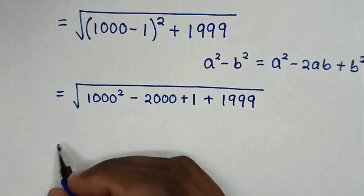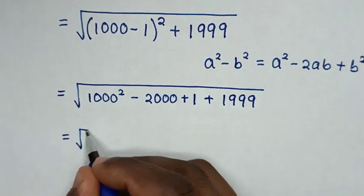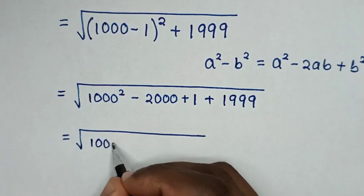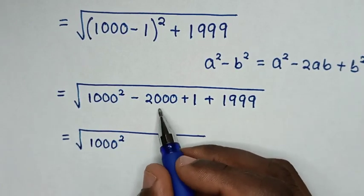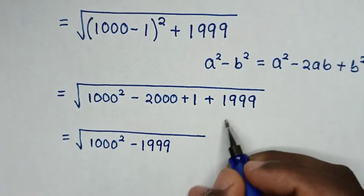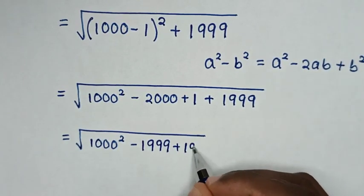Then in the next step, it will be equal to square root of 1000 square. Then negative 2000 plus 1 is negative 1999, then plus 1999.